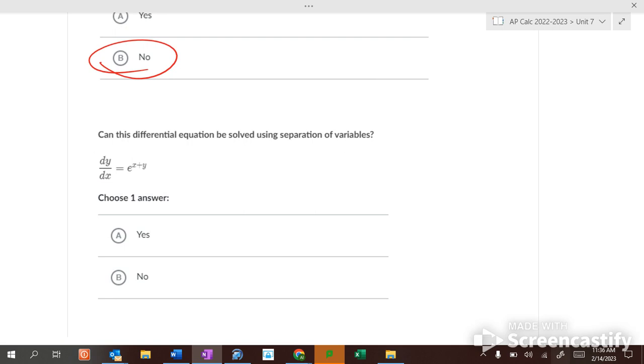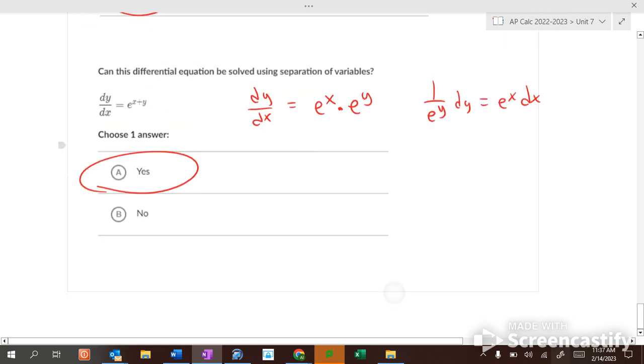Yes, you can with this. Well, you just said addition and subtraction. Well, this is a little different because it's e's. So dy dx equals e to the x times e to the y. By what I explained earlier. So, one over e to the y dy equals e to the x dx. Oh, we got them separated. So, these are yeses and nos.